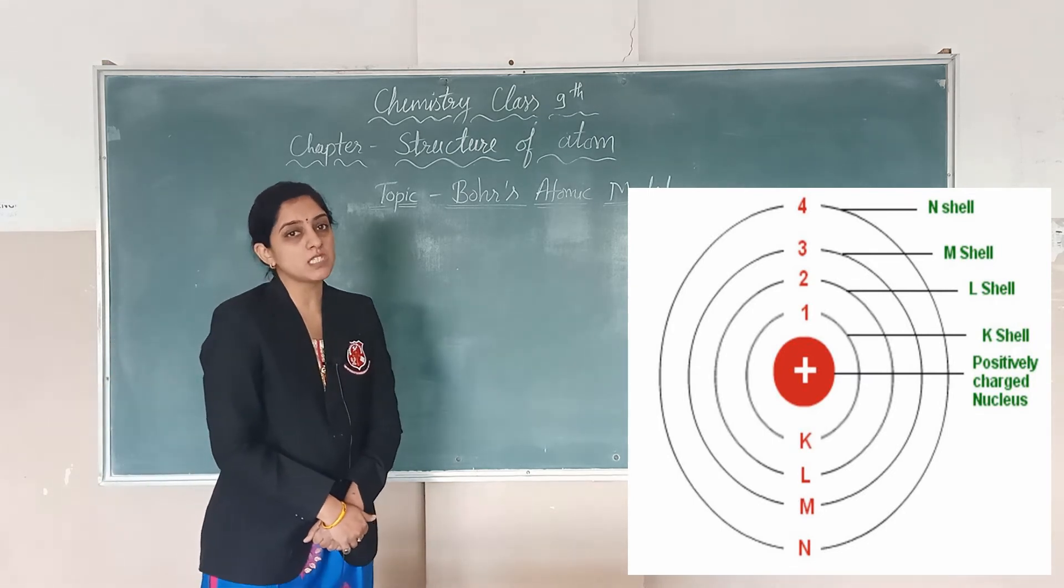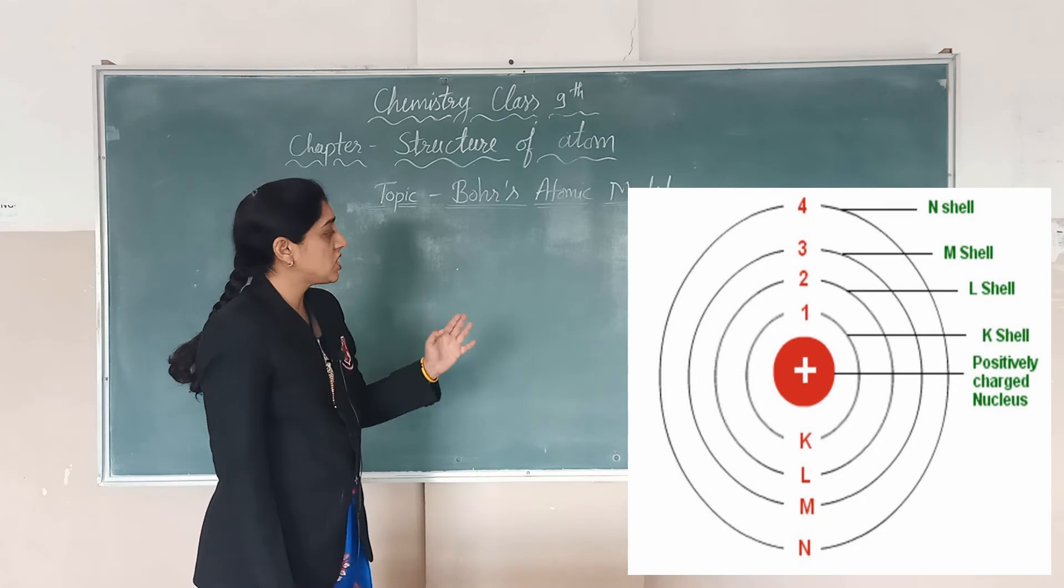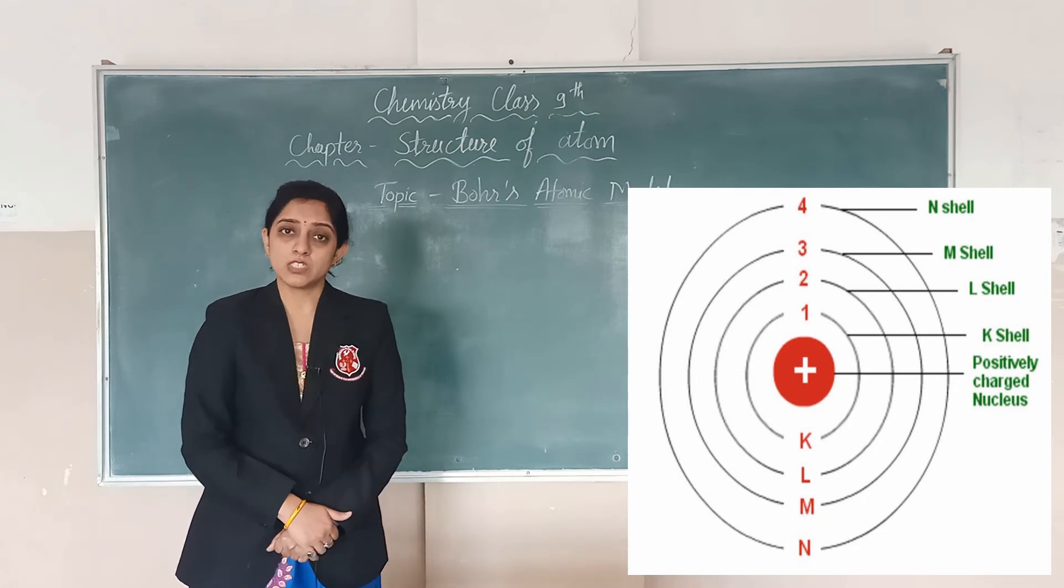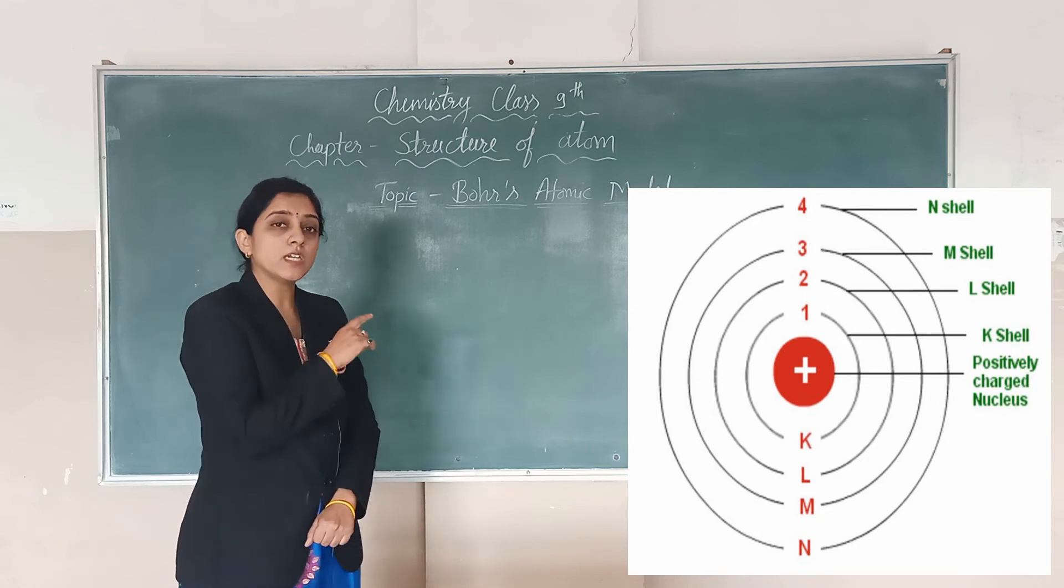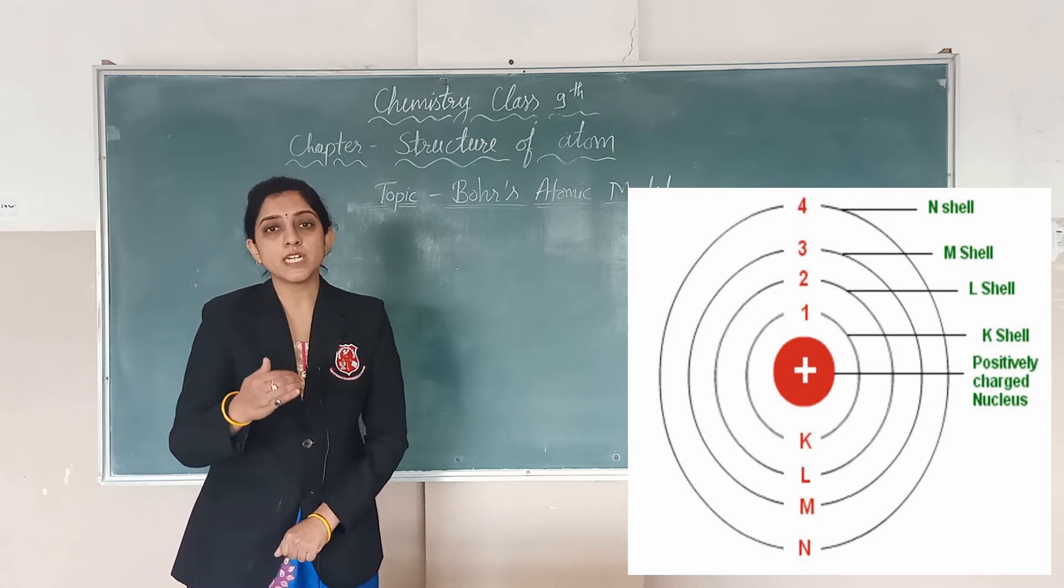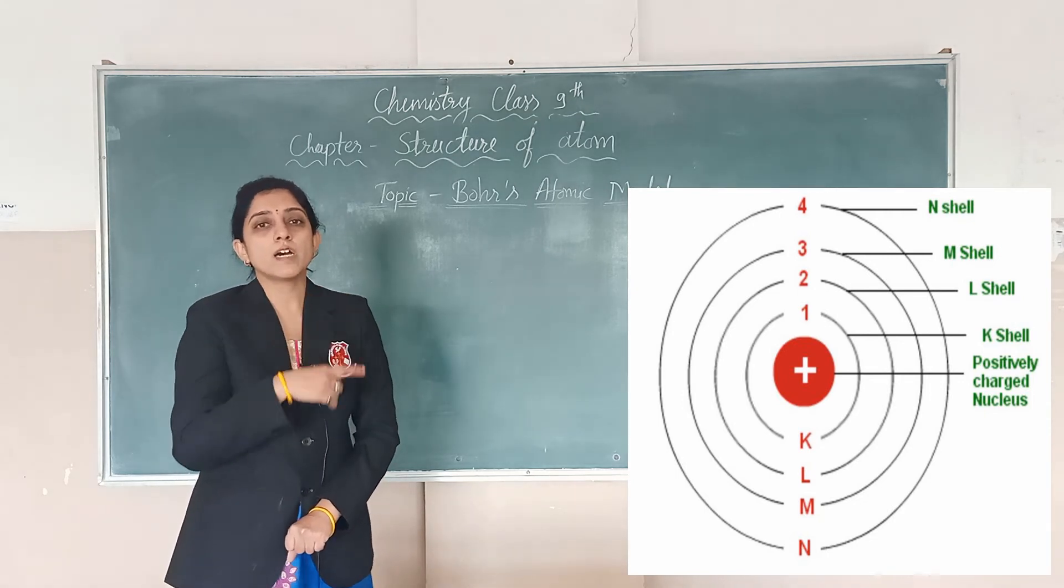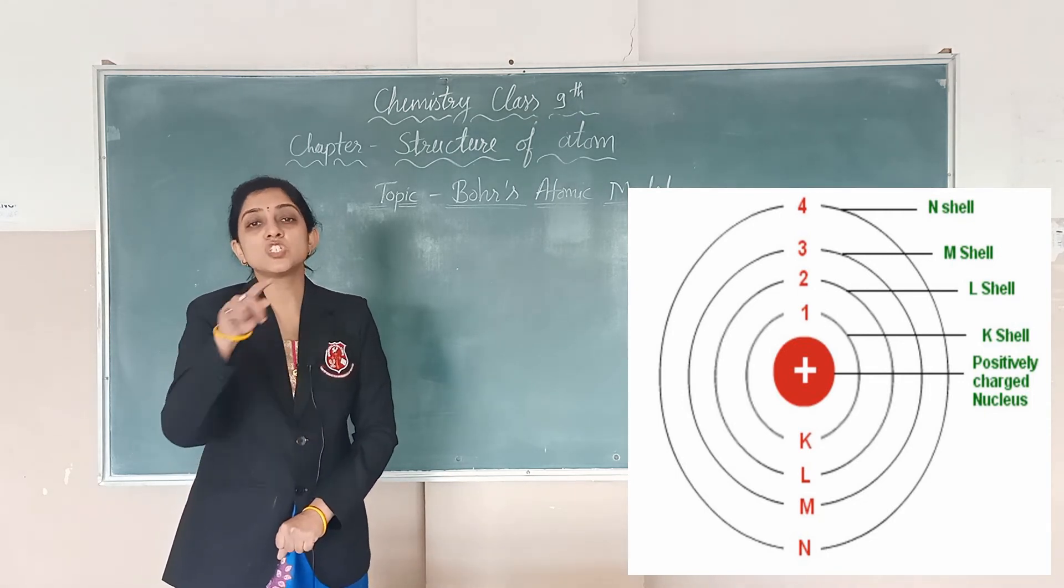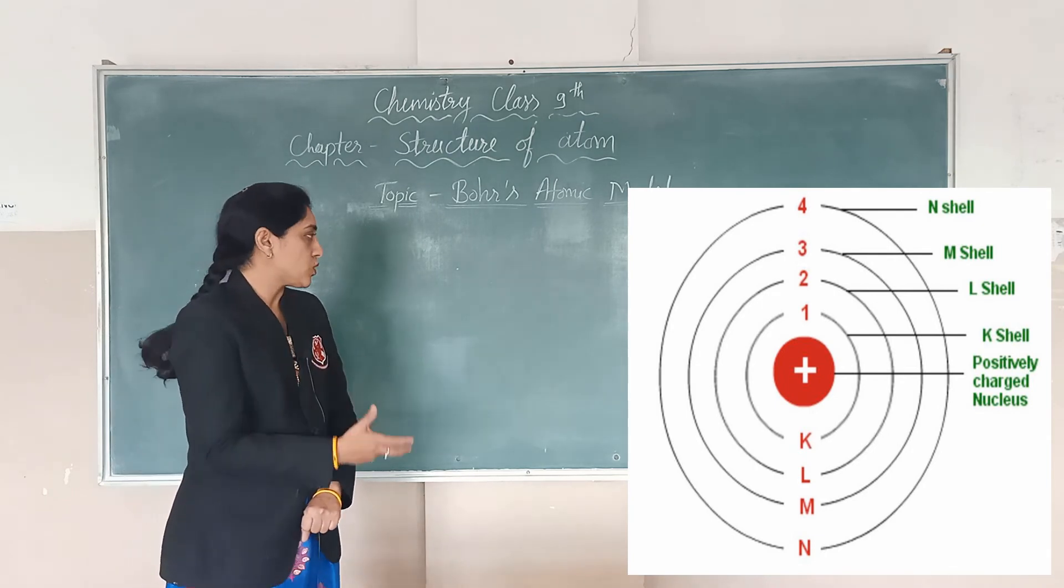Now, the point comes why atom is stable. So, Bohr said that these energy shells have a fixed amount of energy. And if any electron is revolving in that particular shell, it will not lose energy or it will not gain energy. And that's why it will go around this nucleus, this shell again and again without destroying it.